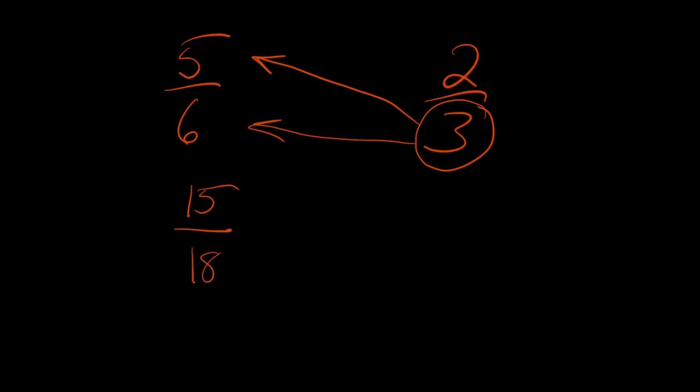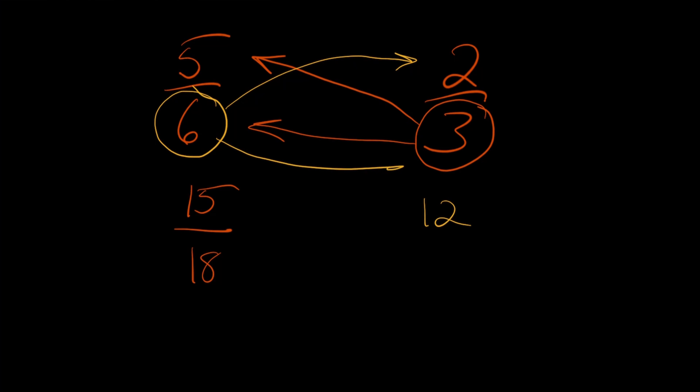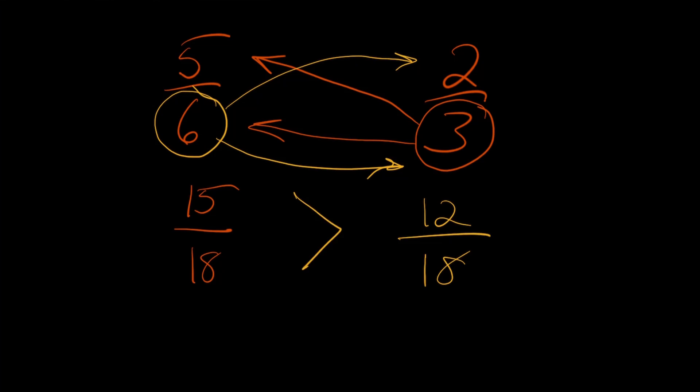Let's do the other one. We look at two thirds and multiply both the top and bottom by the denominator of the other side — in this case, six. We're going to multiply six times two, which is 12, and then six times three, which is 18. And just by doing that, both fractions have a denominator of 18, and we can easily see that 15 over 18 is greater than 12 over 18.